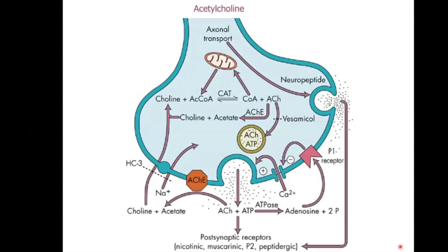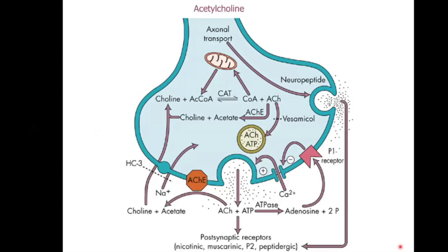Visualizing this cycle: choline with acetyl coenzyme A forms acetylcholine. This acetylcholine goes to vesicles and, in the presence of ATP and calcium, is released. When broken down, it yields choline and acetate; choline re-enters the nerve terminal to form acetylcholine again. Acetylcholine acts not only on nicotinic receptors but also on post-synaptic receptors including nicotinic, muscarinic, and others.